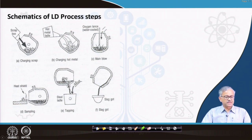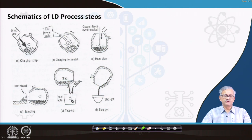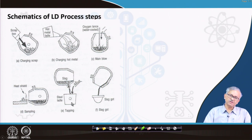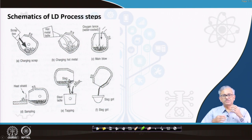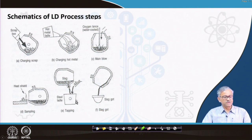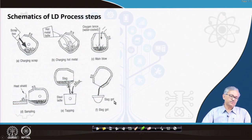After refining, a sample is taken out to check the liquid composition. Then the tapping process takes place — tapping is when you tap the liquid steel from the LD furnace into the ladle. During tapping, alloying and deoxidation can be done. Aluminium is added for deoxidation, and alloying elements are also added here because the inertia of the liquid steel helps in mixing and homogenization of alloying elements and deoxidizer. Finally, the slag is taken out at the slag port.